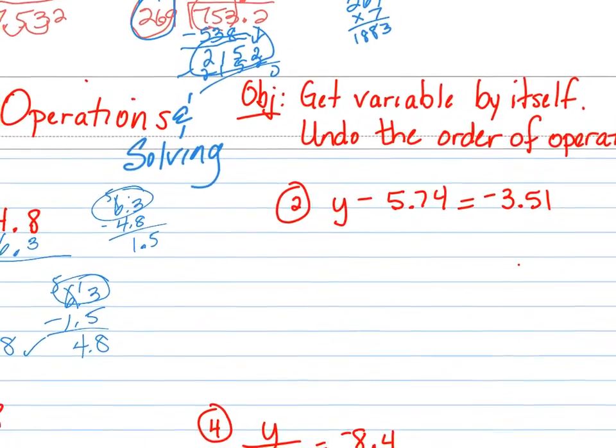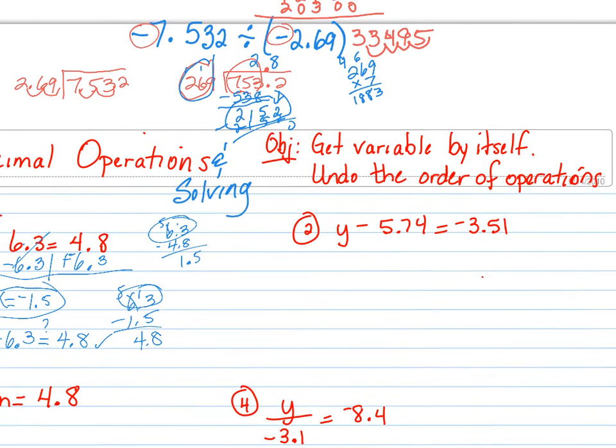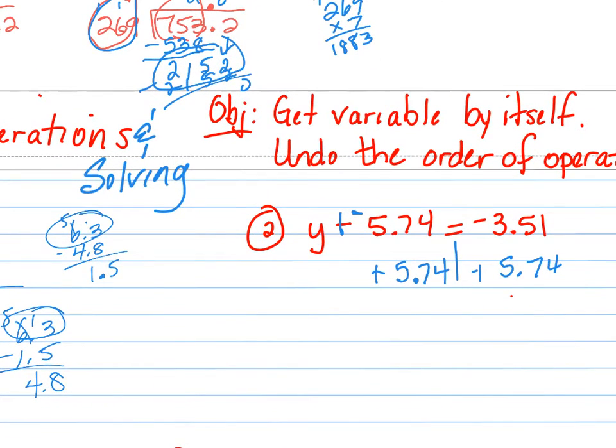Look at number 2. It says Y minus 5.74 equals negative 3.51. Can I simplify the equation? No. There's nothing I can do to simplify it. So they are taking Y and subtracting 5.74. What's the opposite of that? We're going to add 5.74 to both sides. I want to show you guys something real quick. Some of you like to do keep change opposite here, which is great. Just look at this real quick. Do you see this? See where it says plus negative? If you change that, what's the opposite of addition? Subtracting. We would be subtracting a negative. Right?